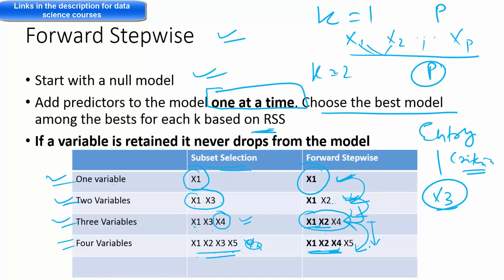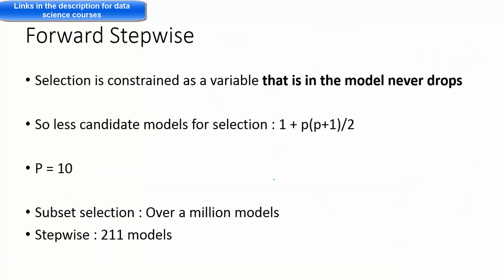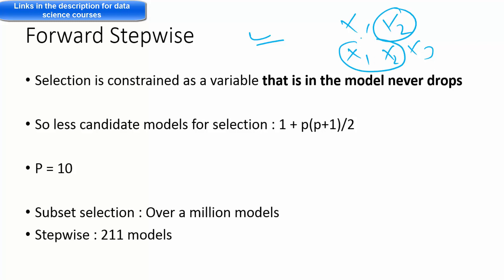Forward stepwise selection is constrained — you cannot have random selection of variables. If x2 is in the previous model, it must be in the next model. So once you have x1 and x2, the only choice for the three-variable model is whether to add x3, x4, or x5. The number of candidates is reduced because the first two positions are already taken from the two-variable model.